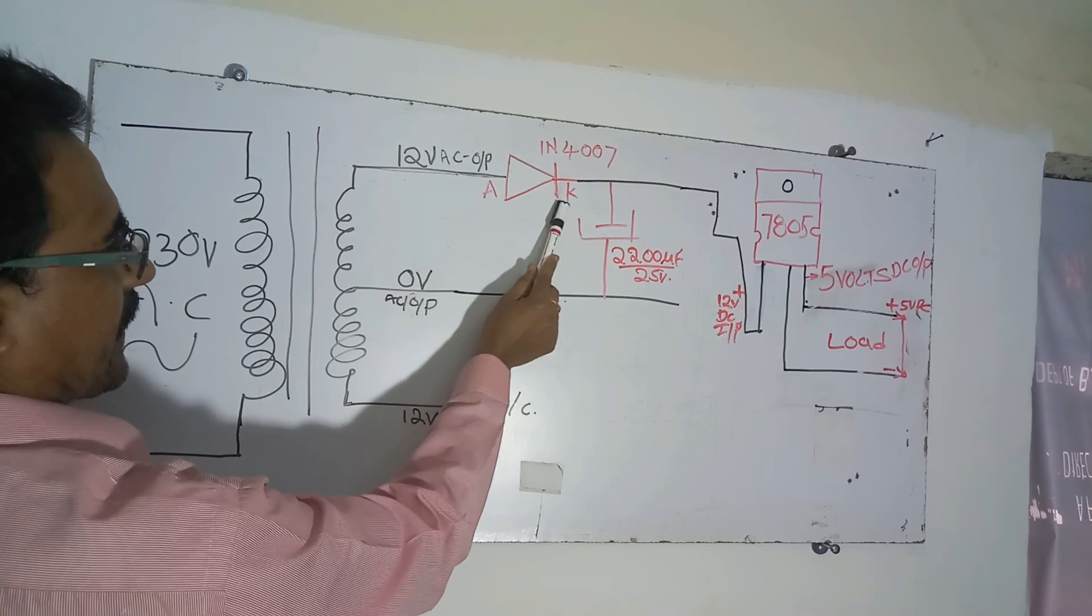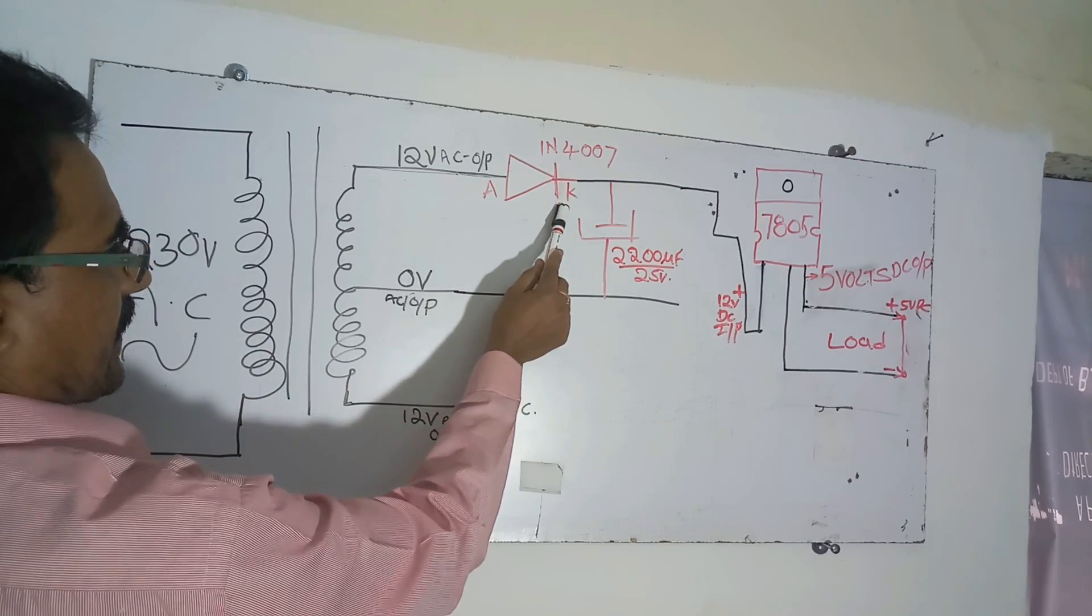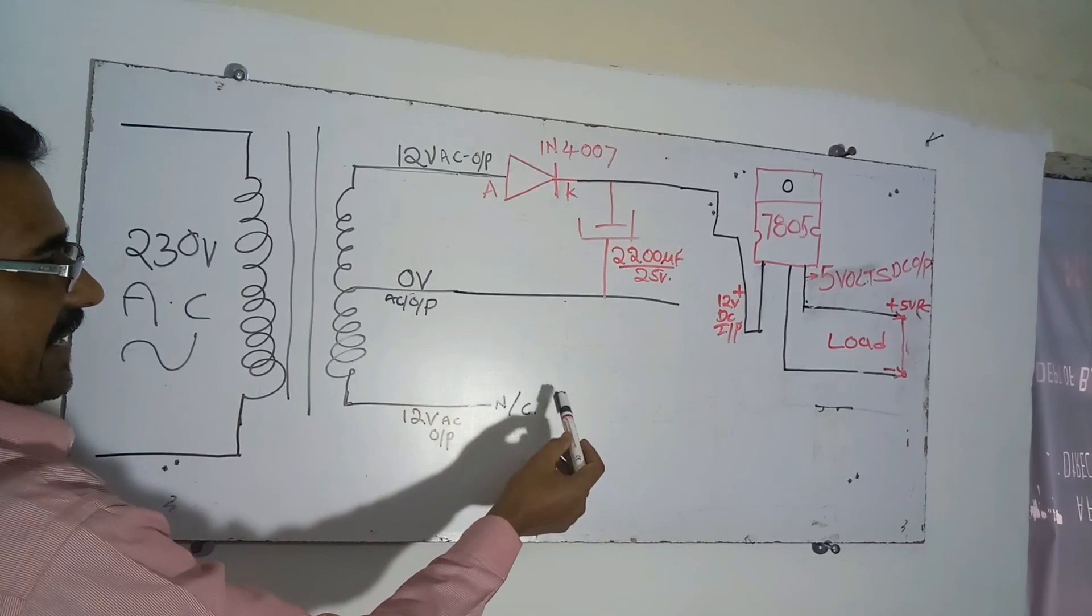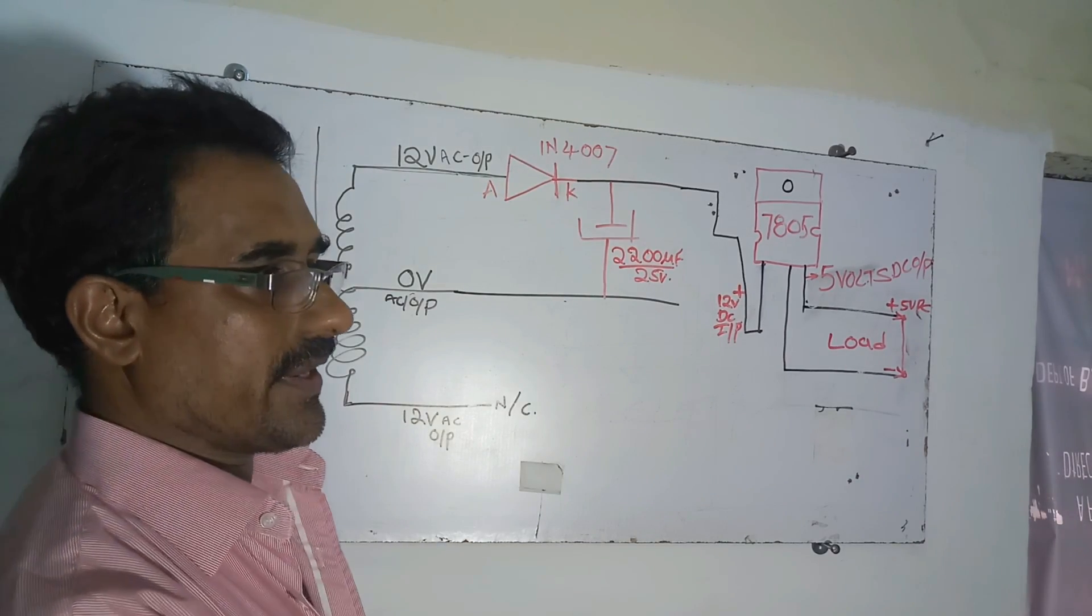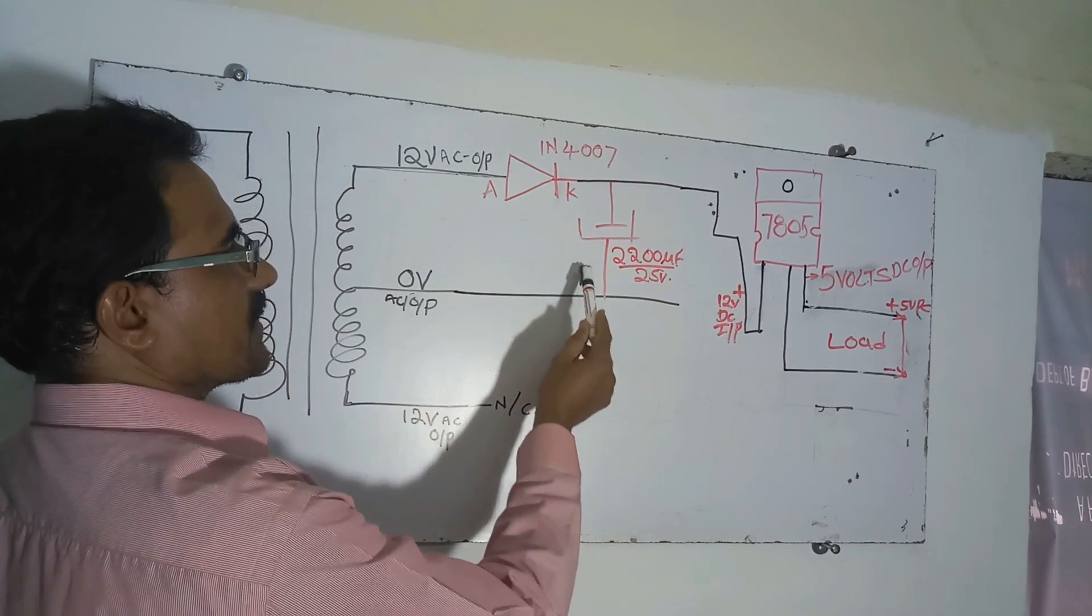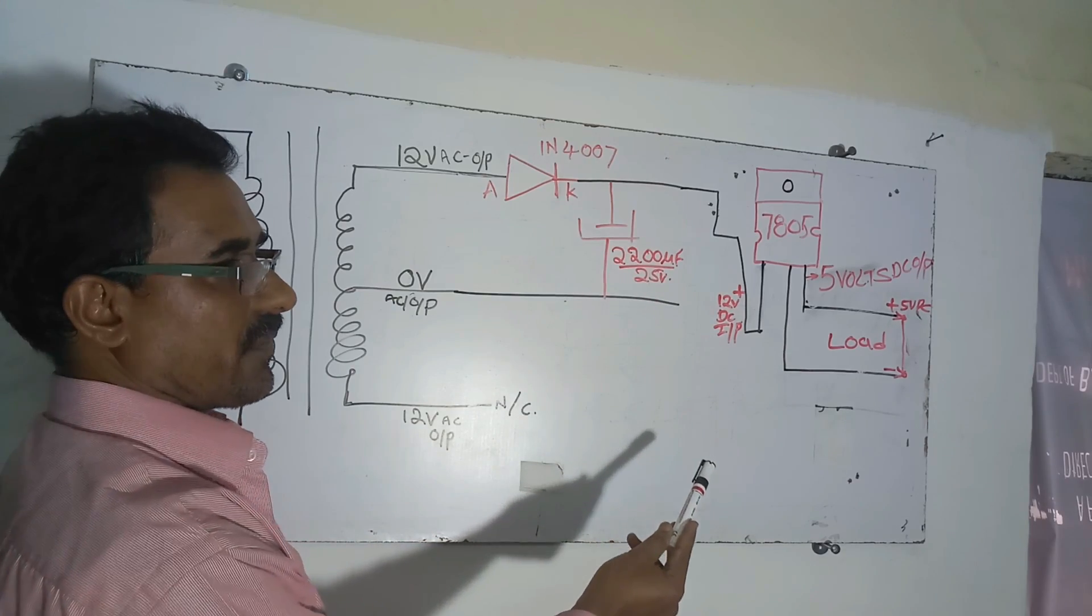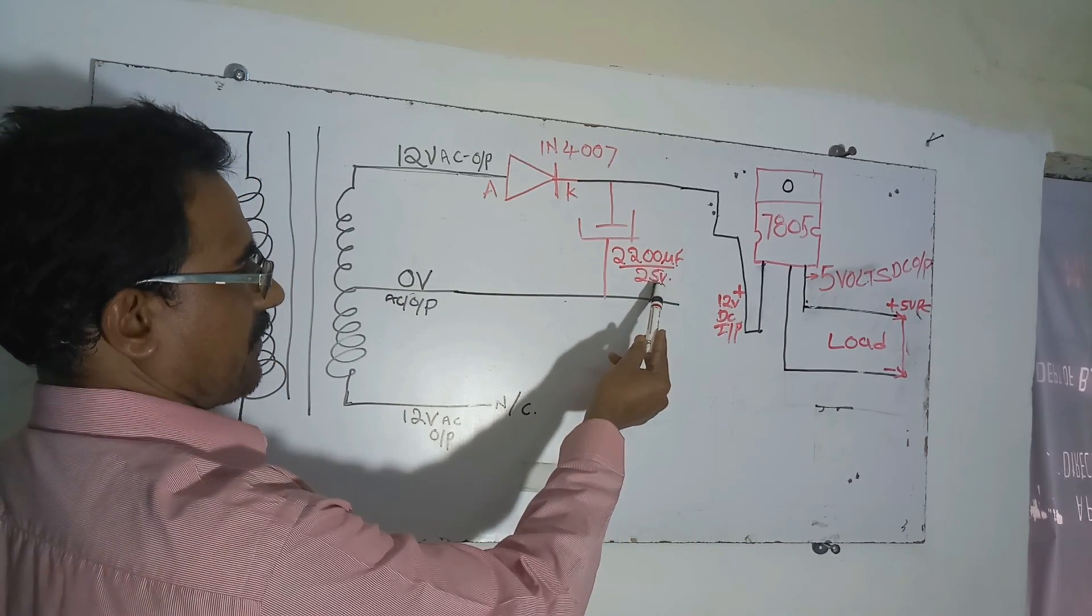IN4007 diode: anode cathode. The silver ring is the cathode, the other side is the anode. I will take another component, an electrolytic capacitor. This one, you take 1000 microfarad 25V or 2000 microfarad 25V.